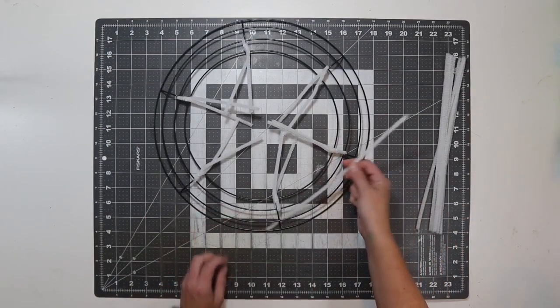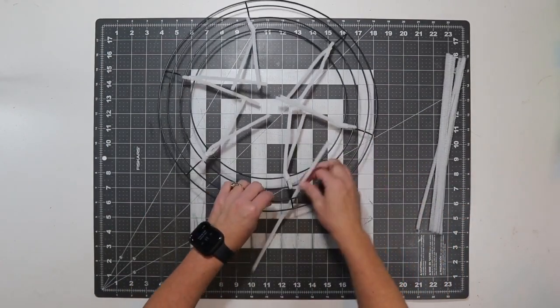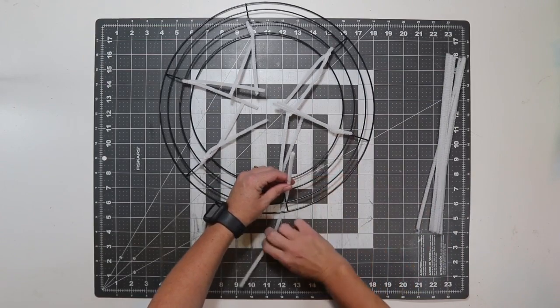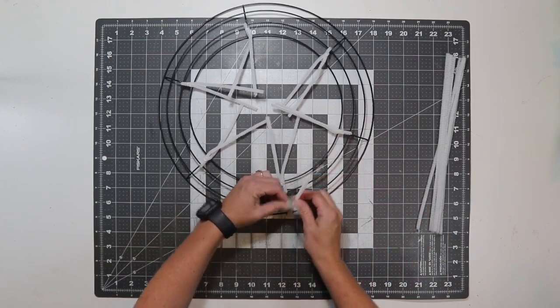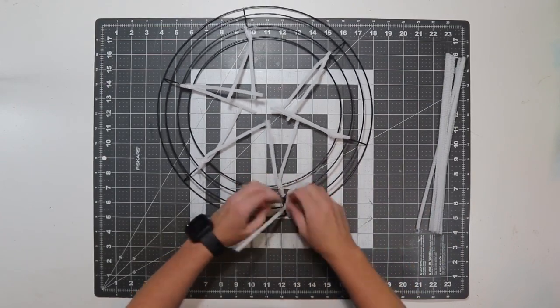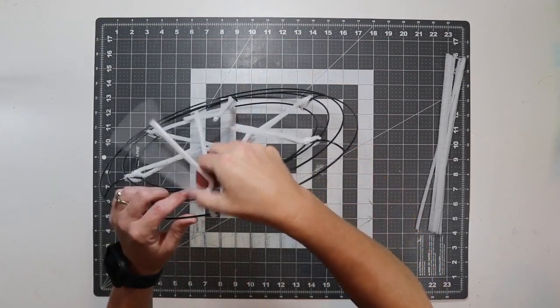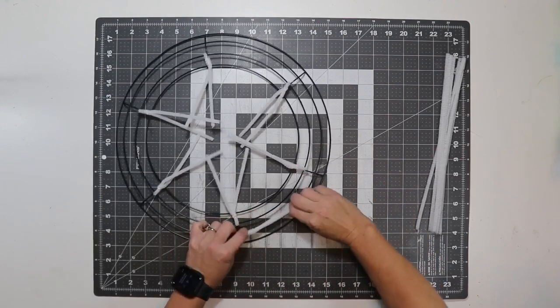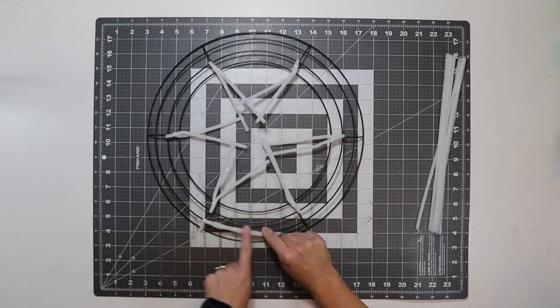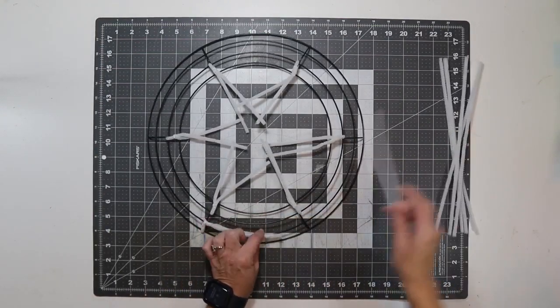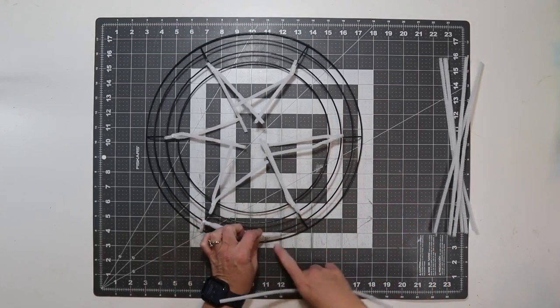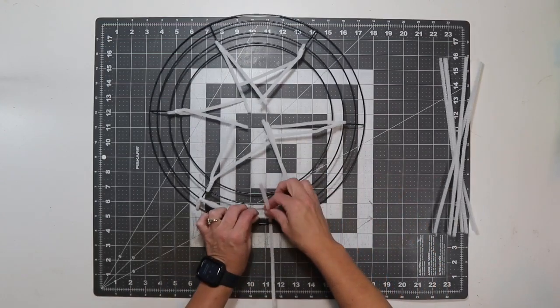To do the outside ties, I just pick a random crossbar to start, and I add the pipe cleaner around the two outside rings. I pull them up evenly, and I'm twisting three times again. So the difference in the outside and the inside is now I'm just going to lay these pipe cleaners along the ring, and where it ends is where my next one's going to begin.